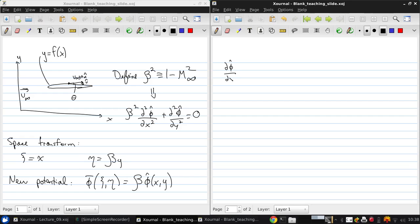So, in x, we could write this as d phi hat d xi times d xi dx. And to be fully general, we also include the contribution from eta times d eta dx.